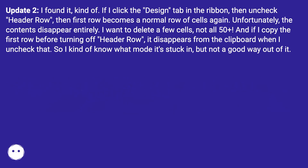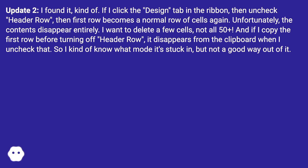Update 2. I found it, kind of. If I click the Design tab in the ribbon, then uncheck Header Row, then the first row becomes a normal row of cells again. Unfortunately, the contents disappear entirely. I want to delete a few cells, not all 50+, and if I copy the first row before turning off header row, it disappears from the clipboard when I uncheck that. So I kind of know what mode it's stuck in, but not a good way out of it.